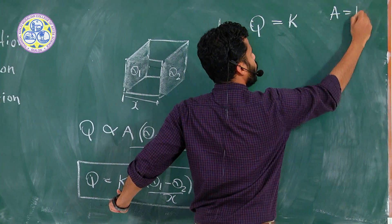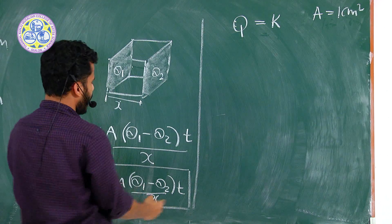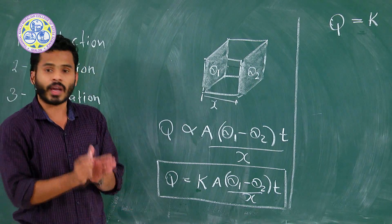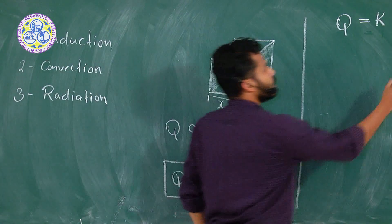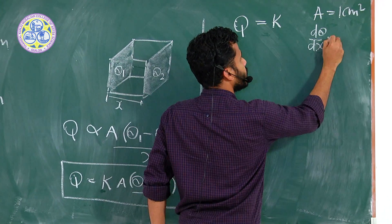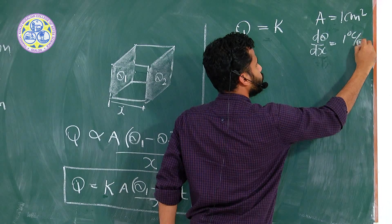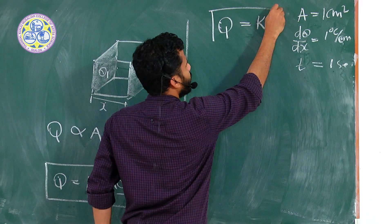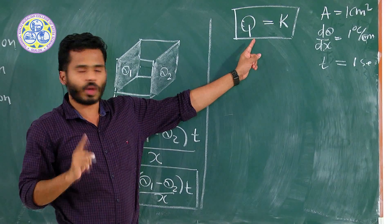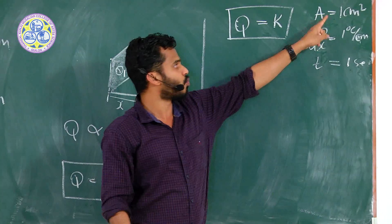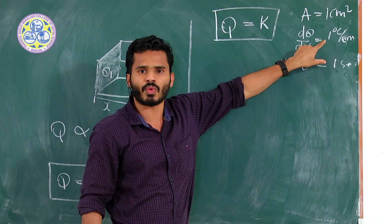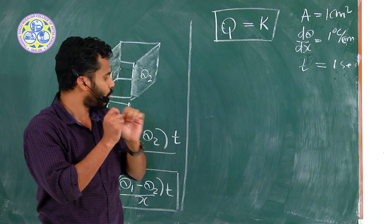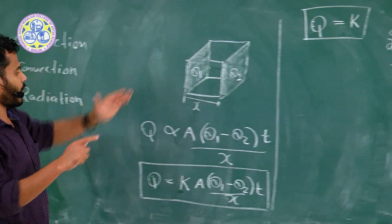Q equals k when the area of cross section is 1 centimeter square, and the temperature gradient — theta 1 minus theta 2 divided by dx — is 1 degree Celsius per centimeter, and the time is 1 second. The amount of heat flowing through a material under these conditions is called the coefficient of thermal conductivity of that material. In that way, thermal conductivity can be defined.